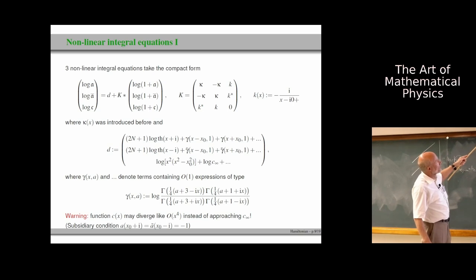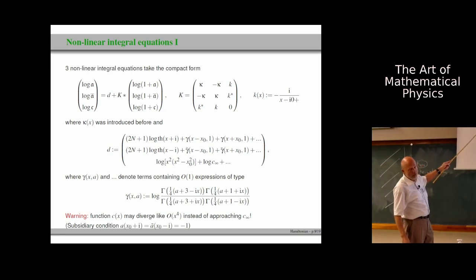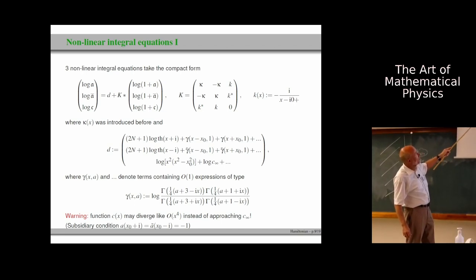Actually, 1 plus little a must be identical to that. 1 plus little a bar, identical to that. And 1 plus little c is identical to that. Some combinations of this type appeared before in our study of the TJ model, supersymmetric TJ model. And then when analyzing these functions, you realize that they satisfy functional equations that can be cast into integral form. Log of little a, log of little a bar, log of little c can be written as convolution integrals of a certain kernel, a 3 times 3 kernel, with these functions: log of 1 plus little a, log of 1 plus little a bar, log of 1 plus little c.